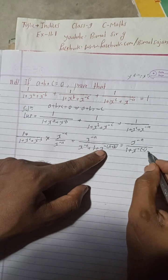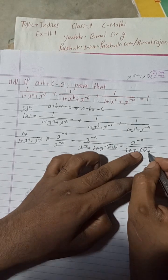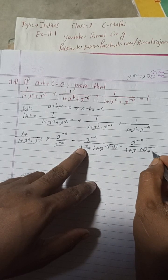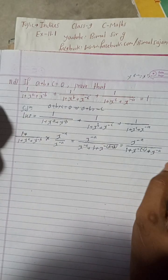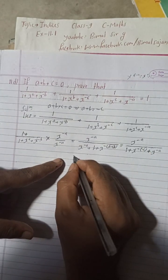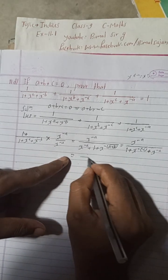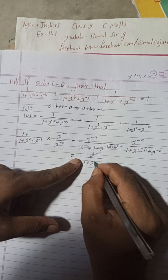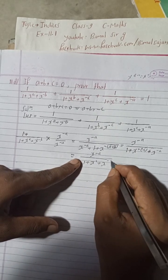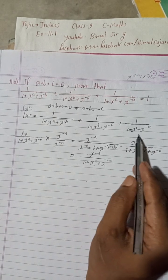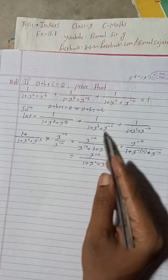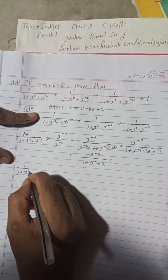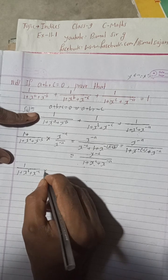So minus of minus c gives plus c. The first term transforms to: x^(-a) divided by (1 + x^c + x^(-a)). Now I will take the second part here, which is 1/(1+x^b+x^(-c)). We want to cancel the b part from the denominator, so we need to choose what to multiply by.